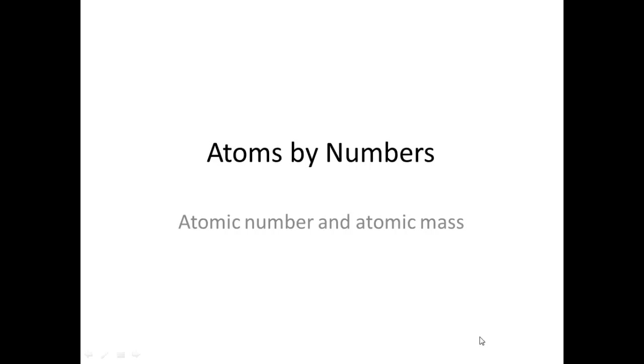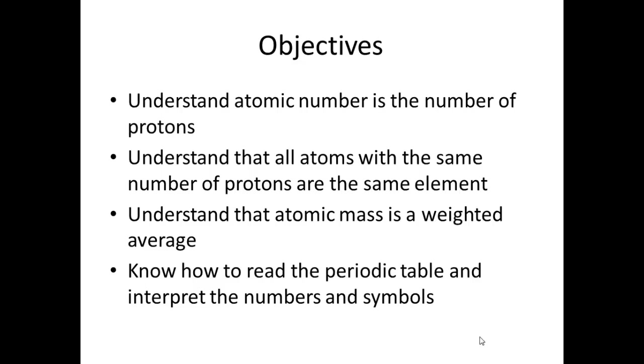Atoms by Numbers, we're going to talk about atomic number and atomic mass and a couple other properties of the atom. Last class we talked about the different atomic models, and so we're just going to relate a little more to the periodic table and some other information we can get and lead into our next unit.